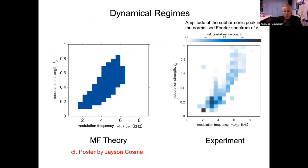Now, what are the dynamical regimes? Basically, what I'm showing here on the right side is a kind of phase diagram with respect to two parameters, the modulation frequency omega d, and the modulation strengths that we apply. And you see that there is an area where you can see color. And the color is simply what you can call the relative crystalline fraction, which is nothing else but the amplitude of the subharmonic peak in the normalized Fourier spectrum of the phase that we record with our heterodyne detector. And this is a calculation, a mean field calculation, actually, by Jason Cosme. And you see that pretty much at the place where we see the colors here, time crystal phase is predicted by mean field.